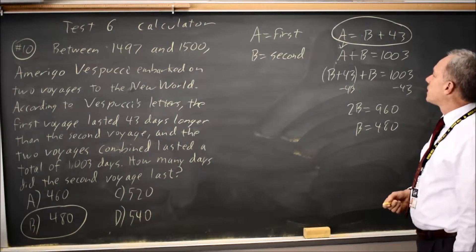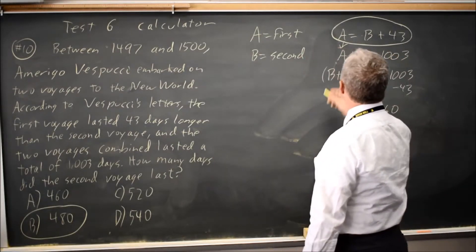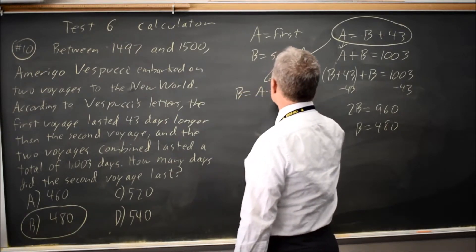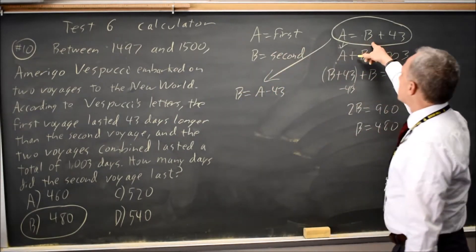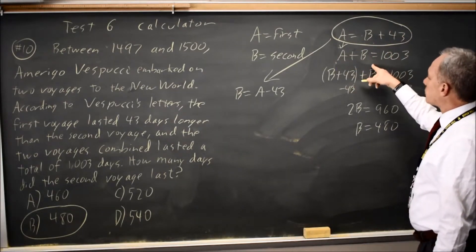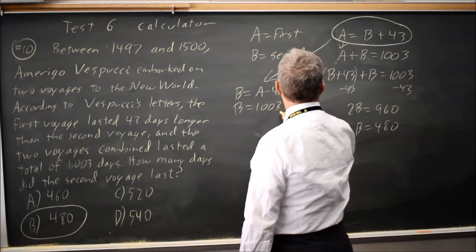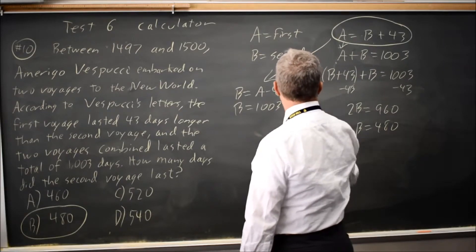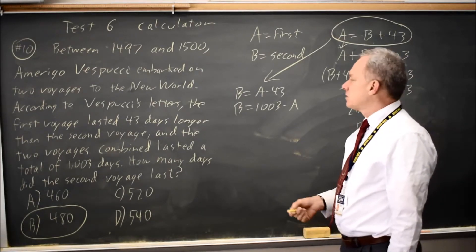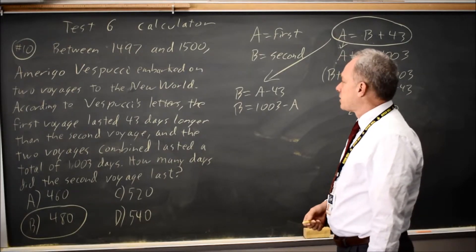Alternatively, I can solve both of these for B, graph them, and find the intersection. So the first one becomes B equals A minus 43 if I subtract 43 from both sides. The second one becomes B equals 1,003 minus A. If I graph them, the X coordinate where they intersect will be A, the Y coordinate will be B, and that answers the question.